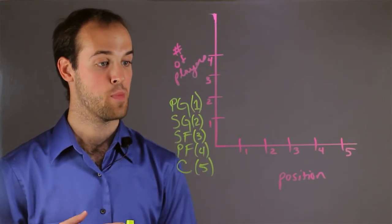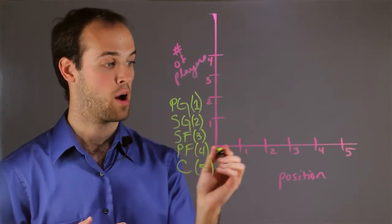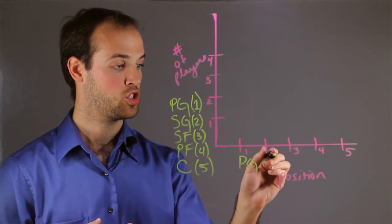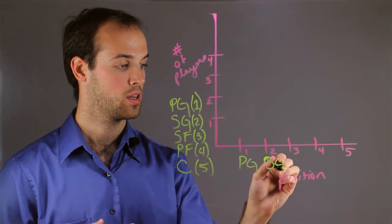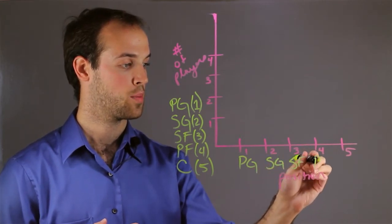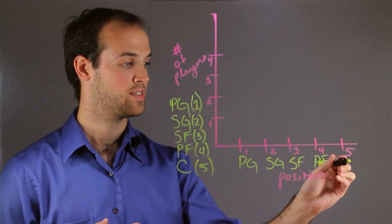And now that they have numerical values, I can represent them on the x-axis, here. 1 is now standing for point guard. 2 now stands for shooting guard. 3 stands for small forward. 4 stands for power forward. And 5 stands for center.